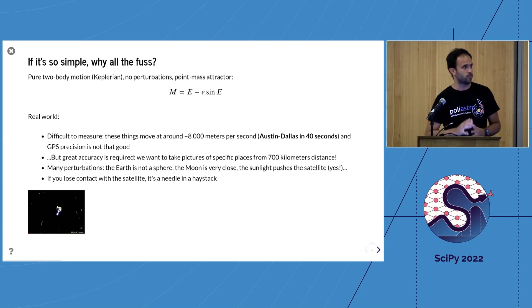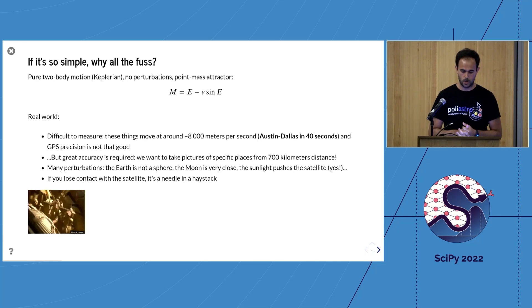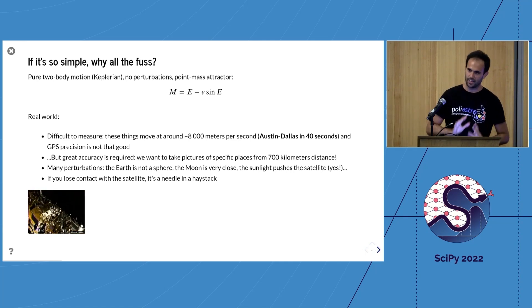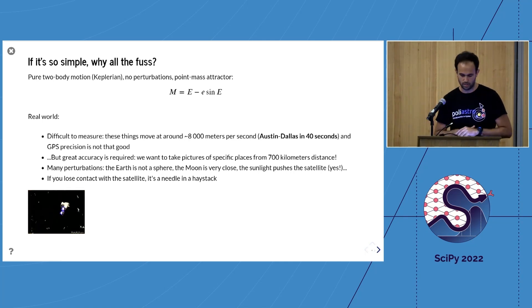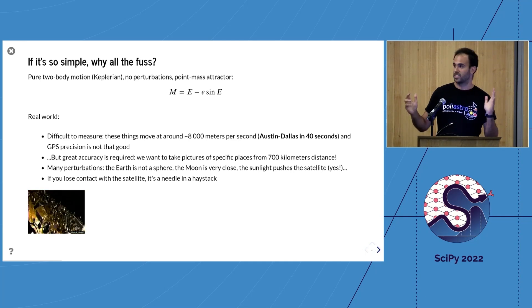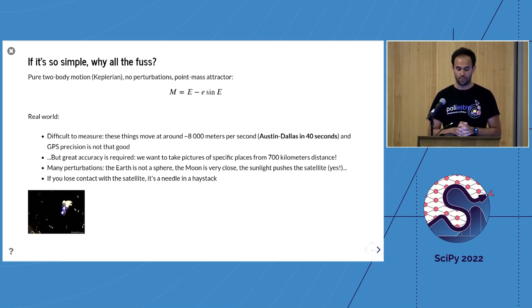You have lots of perturbations from pure motion. The earth is not a sphere—it's more like a very ugly potato, creating a non-uniform gravity field. The moon is very close and makes some effect, especially on satellites in geostationary orbit. The sunlight pushes the satellite as well. If you lose contact with the satellite, it's much worse than a needle in a haystack.